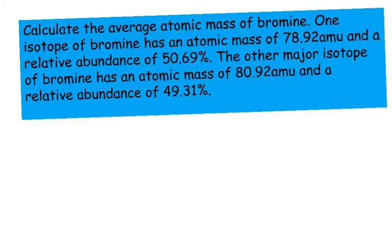Calculate the average atomic mass of bromine. One isotope of bromine has an atomic mass of 78.92 atomic mass units and a relative abundance of 50.69%. And another major isotope of bromine has an atomic mass of 80.92 atomic mass units and a relative abundance of 49.31%.